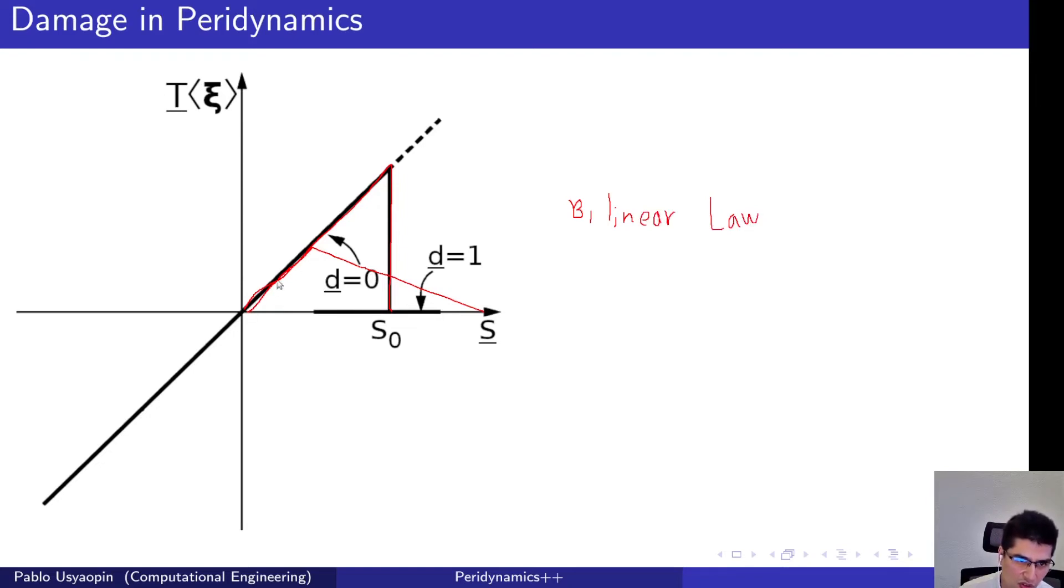The reason why it is called like this is because you have an initial line here where the stretch is growing and the force is growing as well. But at this point, when the stretch reaches this point, the bond force starts to decrease. But it doesn't drop totally as previously shown, but rather the force starts to drop in a very slowly manner.